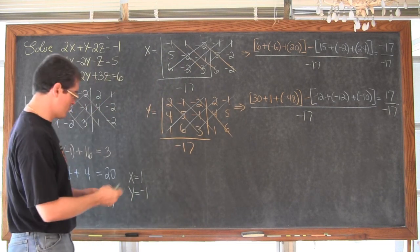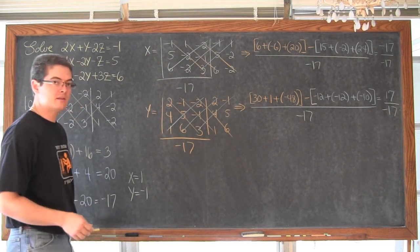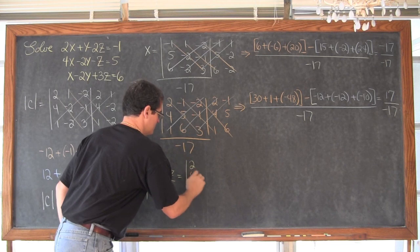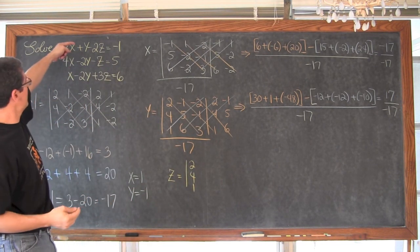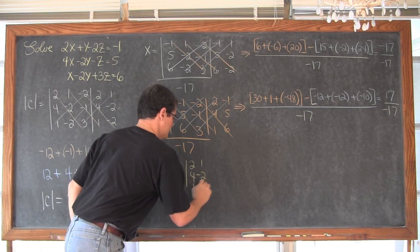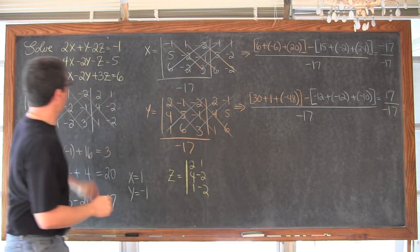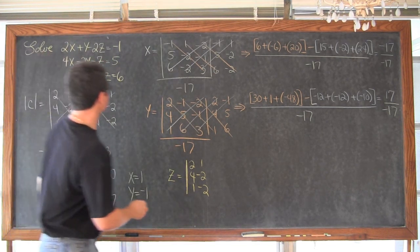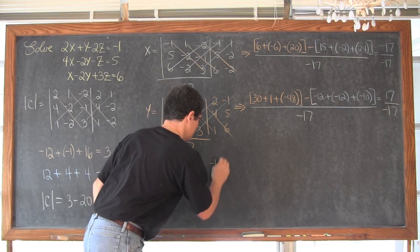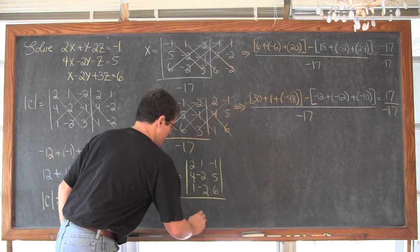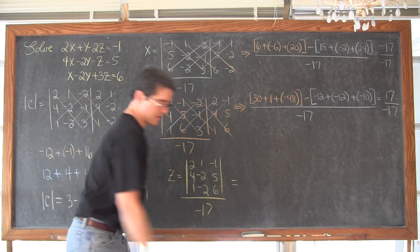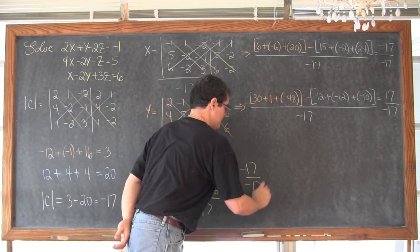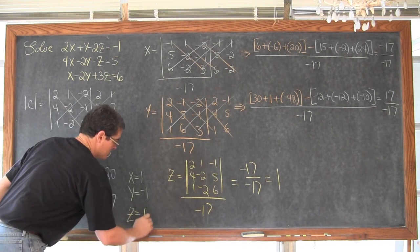We repeat this one more time for z. The matrix has first column 2, 4, 1; second column 1, negative 2, negative 2; and we put those constants — negative 1, 5, and 6 — in for the coefficients of z in the third column. That goes over the determinant of C, which was negative 17. This ends up coming out to be negative 17 over negative 17, which comes out to be 1. So z is equal to 1.